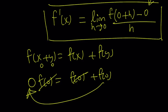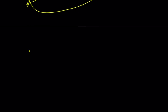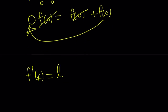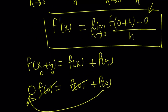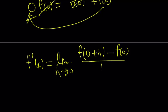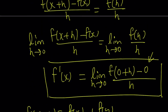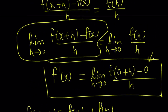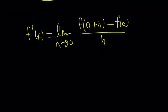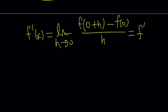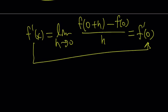Replacing zero with f(0), the right hand side becomes the limit as h approaches zero of [f(0+h) - f(0)] / h. But by the definition of the derivative, this is exactly f'(0). So we get f'(x) = f'(0) for all x. The derivative of f at any point equals the derivative at zero — a constant. Let's call it a.